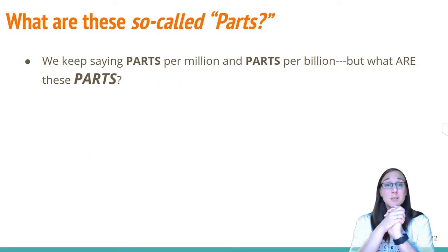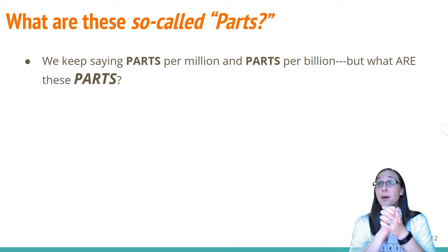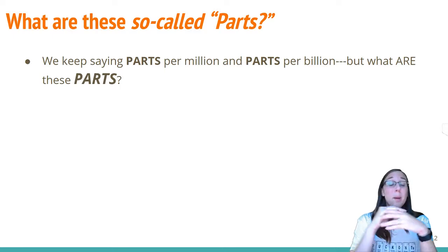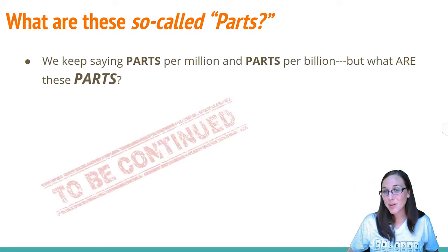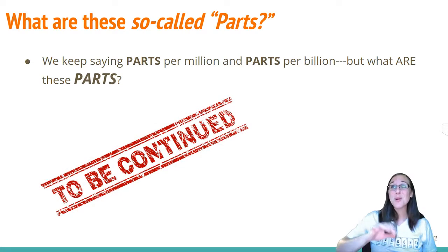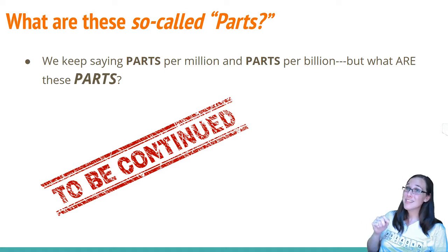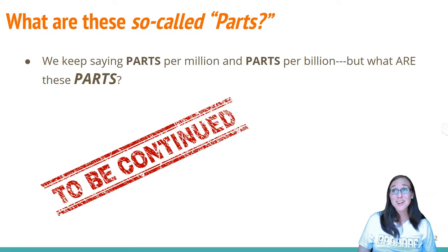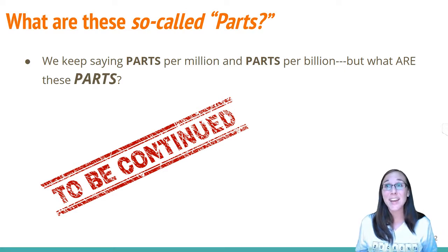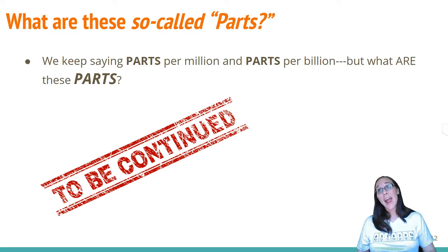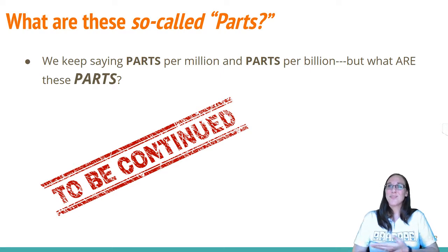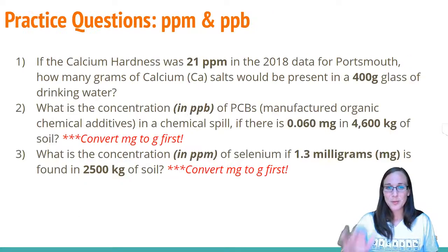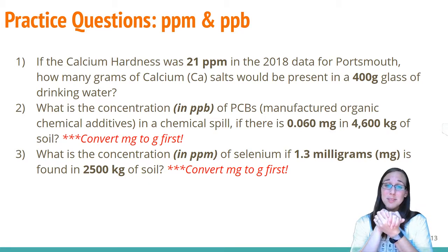Last but not least — what are these so-called parts? I keep saying parts per million, parts per billion — what are the parts? I'm going to leave you on a cliffhanger, because we're going to go into those parts in a later lesson, which I'll link to this video. Those parts in chemistry are atoms. I want to teach you next about atoms, what they're made up of, why they're important, and a little bit of history. Atoms are pretty much the thing that makes up every chemist's best dreams.